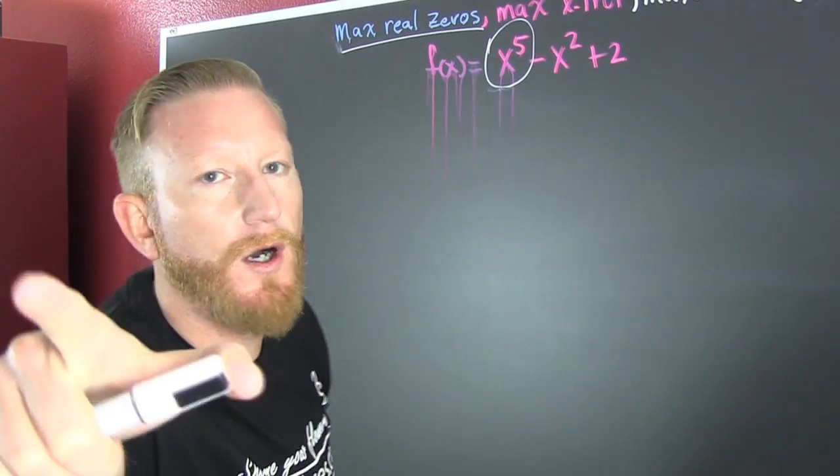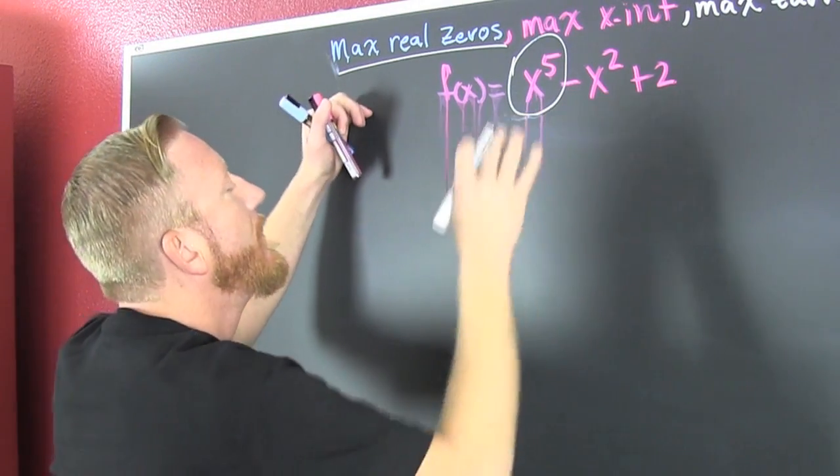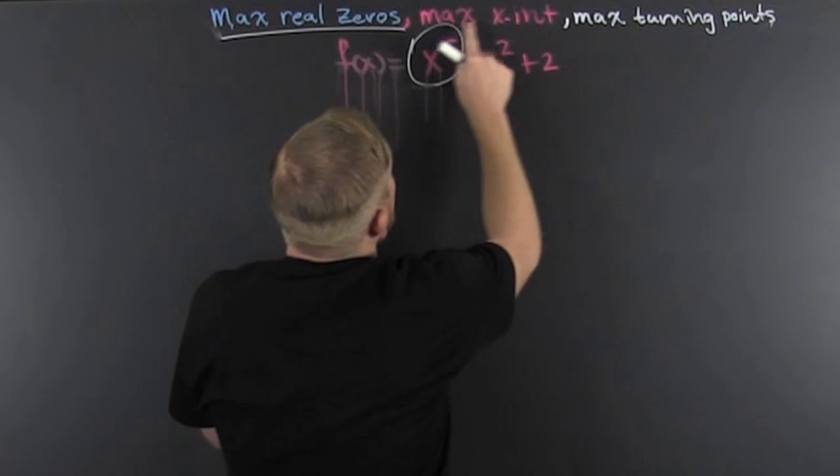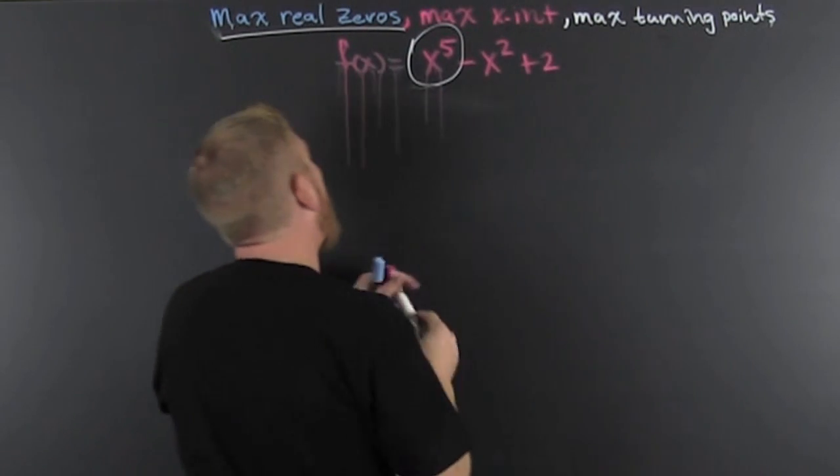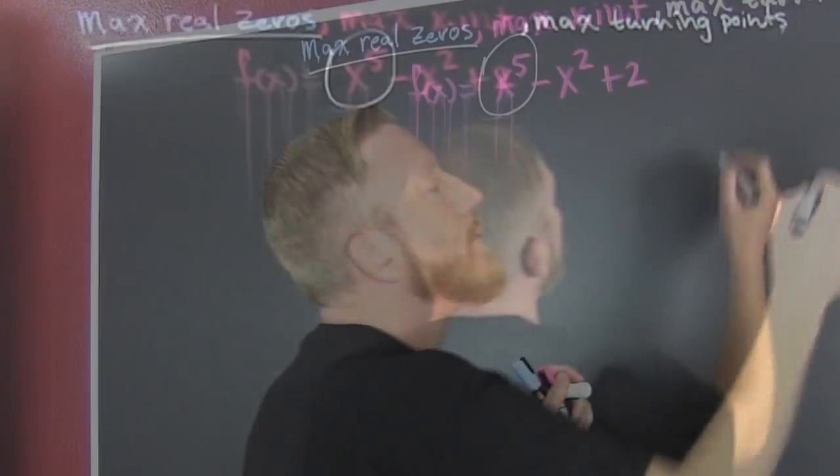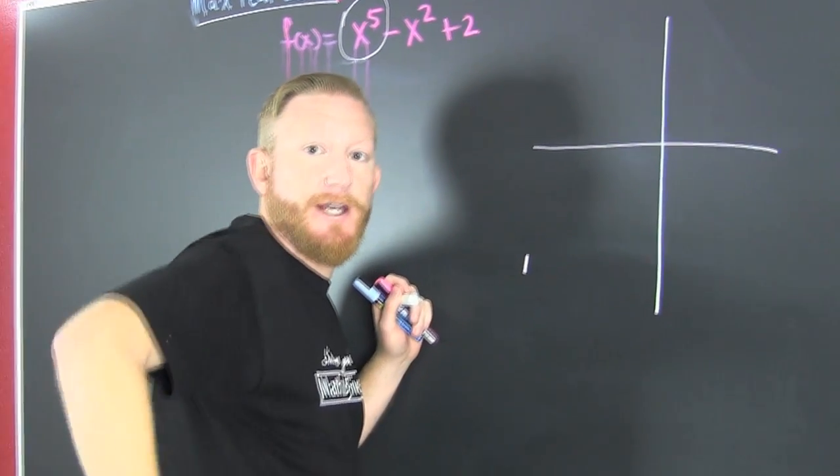The turning point, what I'm talking about. The maximum real zeros, the maximum x-intercepts, and the maximum turning points is all brought to us by the polynomial end behavior. Check out that video.